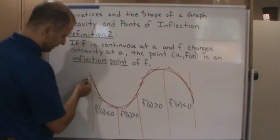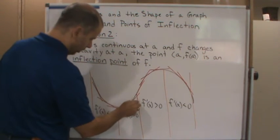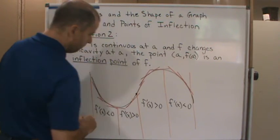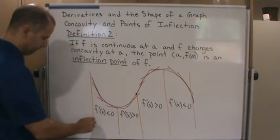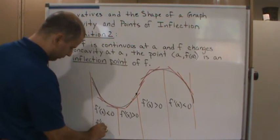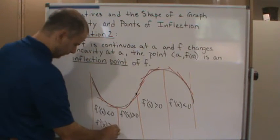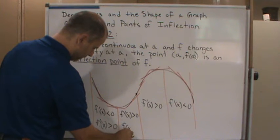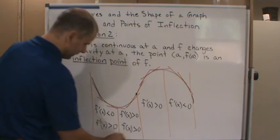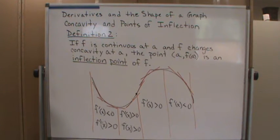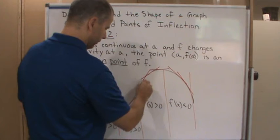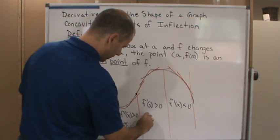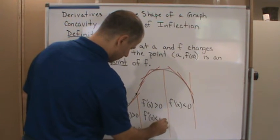Now let's look at the concavity. This is all concave up all the way to this inflection point. So what would the second derivative be? Well, the second derivative would be positive here and positive here. And then over here it's going to be concave down from the inflection point on, so here the second derivative is going to be negative.